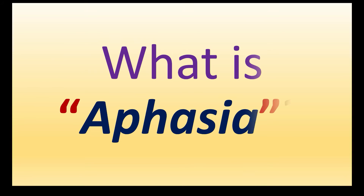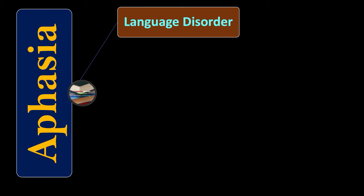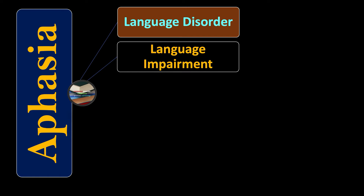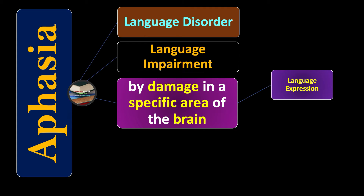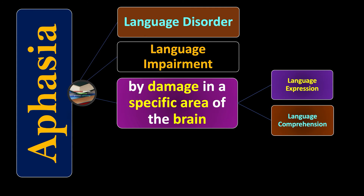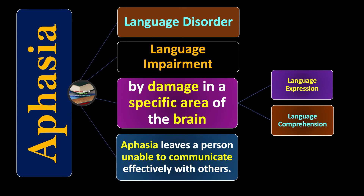Hello and welcome to a new topic. What is aphasia? Aphasia is a language disorder — there is some problem in the way language should be executed. We also call it language impairment, meaning language is damaged in the brain. The power of language is affected, impaired, destroyed. A person is unable to communicate effectively. Aphasia is caused by damage in a specific area of the brain that affects language expression — how to speak and write — and language comprehension — how to receive information and understand.